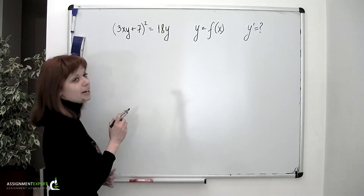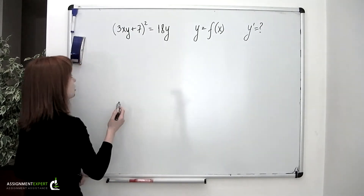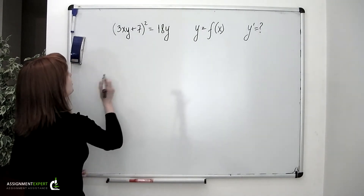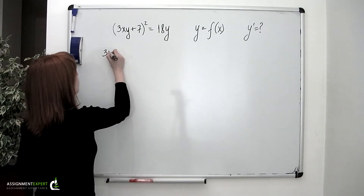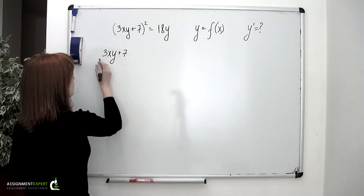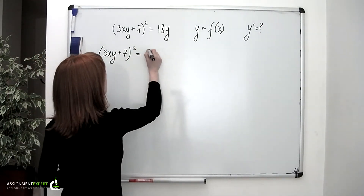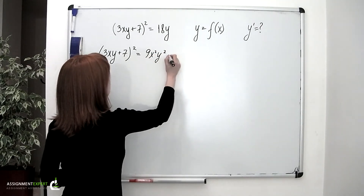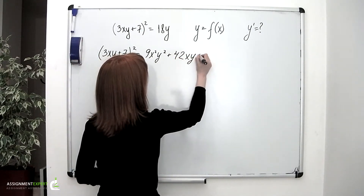We're going to find the derivatives of the left and right sides of this equality. On the left, we have a quadratic function, and I suggest that we expand the brackets. So, expanding 3xy plus 7, squared, we obtain 9x squared y squared plus 42xy plus 49.